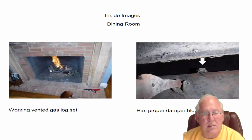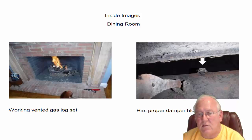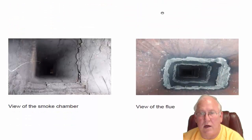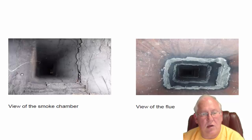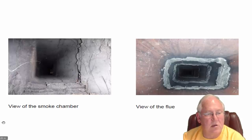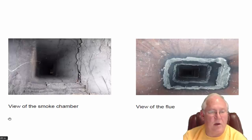Moving to the dining room — it's a manually operated vented gas log set. In this particular case it has a traditional damper with a damper block, which is actually code required. The flue system looks good, and the smoke chamber at the base of the flue system looks good too — there's no missing mortar in that one. So it's just the other two, the downstairs and the living room, that need to be repaired, and I'm giving you a price on doing that.